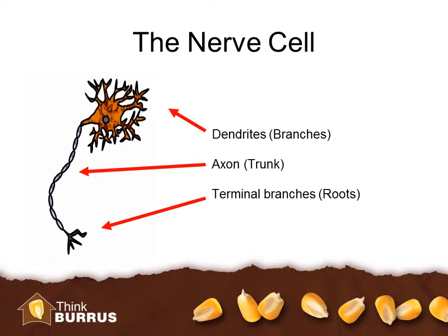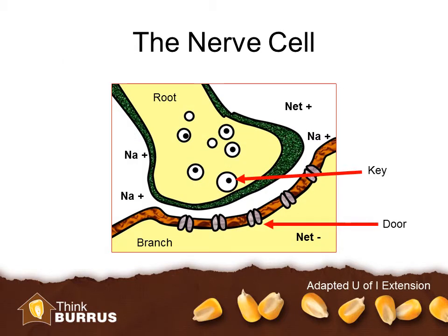You may remember from last time that disrupting information flow happens at those little pieces of the nerves — at the neuron level, at the cellular level. A quick reminder: that nerve cell has branches, it has a trunk, and it has roots. The roots of one neuron are oriented toward the branches of the next neuron, with a gap in between. We also need to mention another important mechanism — the idea that there are keys and doors in neurons. The key from one neuron opens the door in the next neuron, which causes information to flow from one neuron to the next.